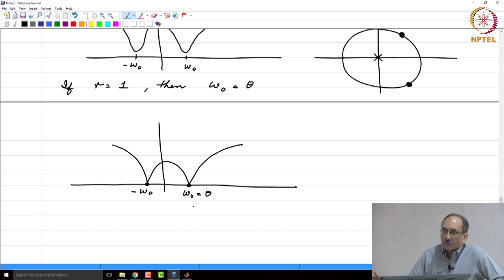Because remember, response to cos omega naught n plus theta, output will be amplitude scaled and phase shifted and the amplitude scaling will be the magnitude frequency response at that frequency. Here, at that frequency, the magnitude response is precisely 0. Therefore, if you apply cos omega naught n plus theta to this system, the output will be 0. And that is why this is called as a notch filter, because it notches out that particular frequency.